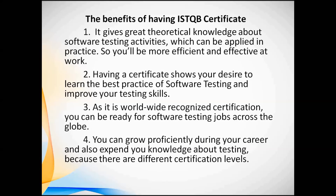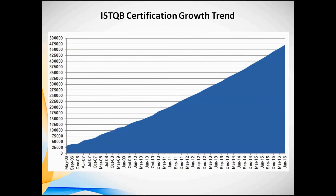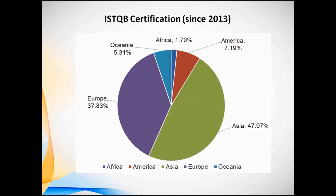On this slide you can see the ISTQB certification growth trend from May 2006 until June 2016. You can see that the trend is growing fast and ISTQB certification is becoming more and more popular. Here you can also see how ISTQB certification is distributed across the globe: Asia has the biggest share of ISTQB holders at 48%, followed by Europe, then America, Oceania, and Africa.